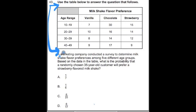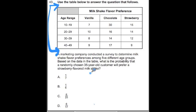Now let's read the problem. A marketing company conducted a survey to determine milkshake flavor preferences among five different age groups. Based on the data in the table, what is the probability a randomly chosen 35-year-old customer will prefer a strawberry flavored milkshake?